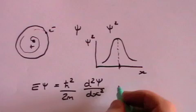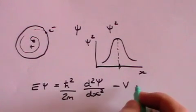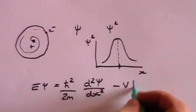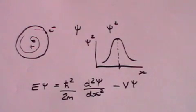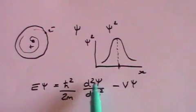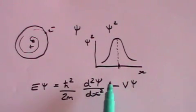minus the potential which is V times psi, and that is in one dimension. We tend to work in one dimension to keep things simple. If it were in three dimensions, then you'd have to have d²psi/dx² plus d²psi/dy² plus d²psi/dz², but we try and keep it simple.